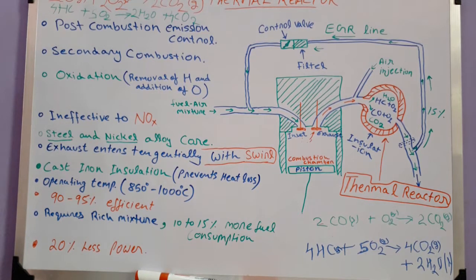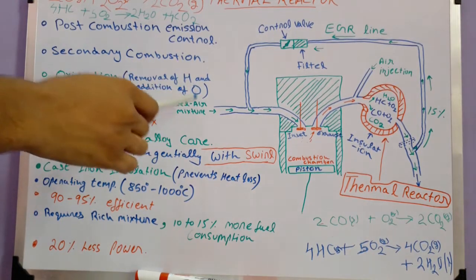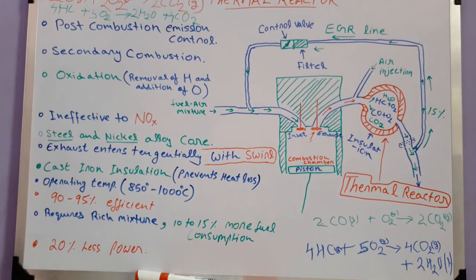It is a chamber which proceeds to further combustion of exhaust. But why does it burn again? Because combustion is an oxidation process, and both removal of hydrogen and addition of oxygen is oxidation. So we are oxidizing combustion products again for complete combustion. Complete combustion has only CO2 and H2O as products.